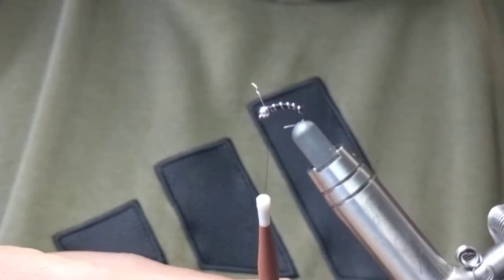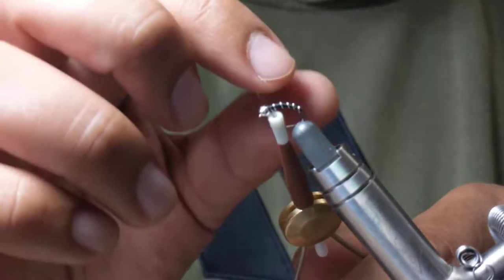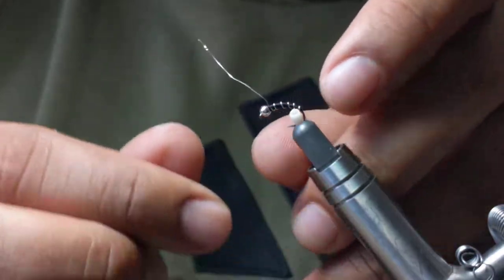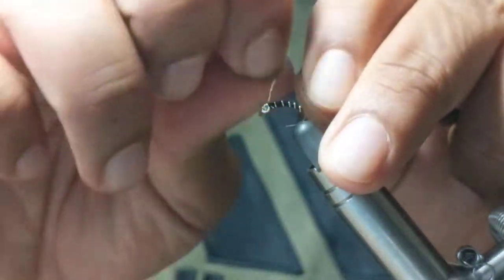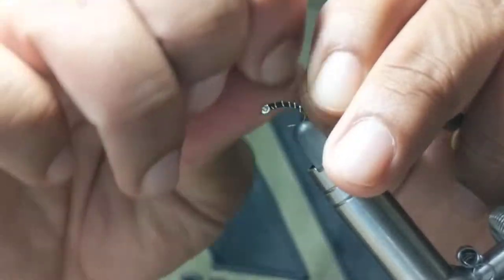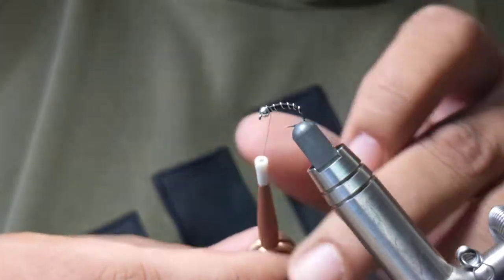From there you could do the technique where you bring your bobbin up to keep the tension and then helicopter this off. I don't do that—I just keep tension this way and then I'll helicopter that wire off. The thinner the wire, the more easily it'll snap off.